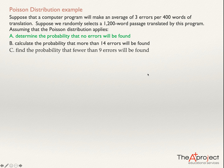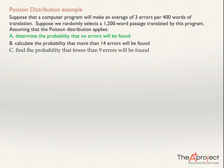Even if nobody tells me that the Poisson distribution applies, I would recognize that the Poisson distribution will be a good model to use for solving this problem. First, this is a discrete random variable — the number of errors that this translation software makes when translating. Second, I noticed that I have the average of this random variable. The average is 3 errors per 400 words, so I know the average in a period or interval. If I know this is a discrete random variable and I know the average in an interval, then a Poisson distribution will be a good model.